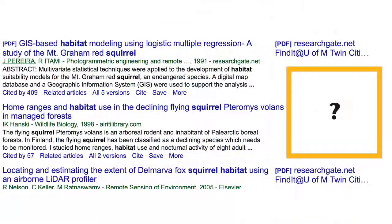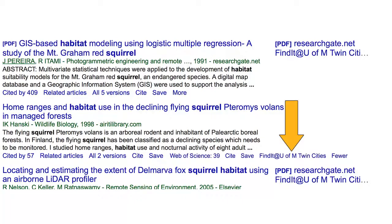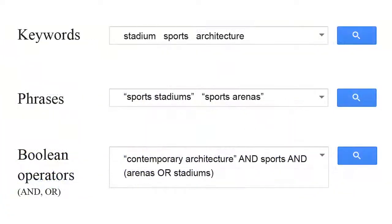Sometimes the Find It button may not appear. If you don't see the Find It button, select More. Like many library databases, the most effective way to search Google Scholar is by using keywords, phrases, and Boolean operators.